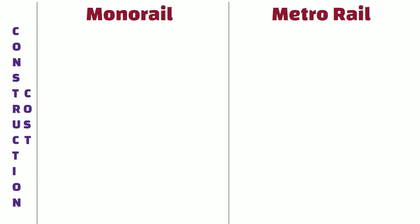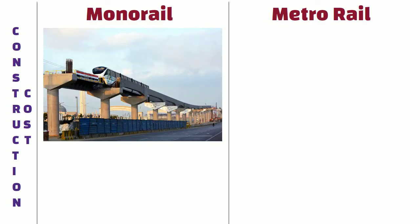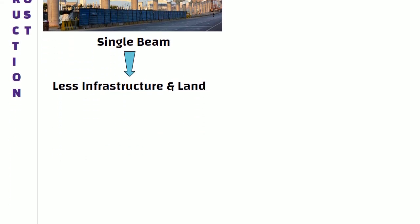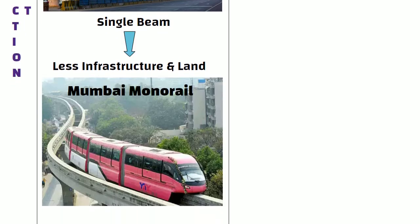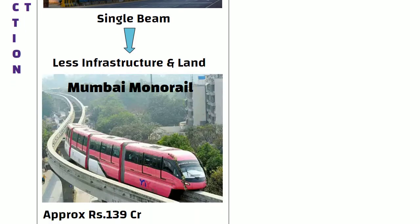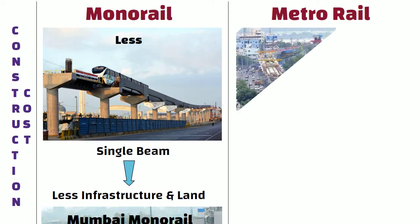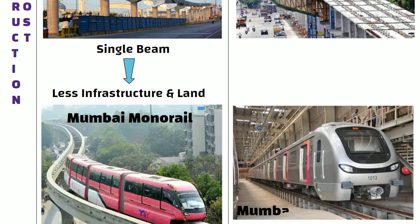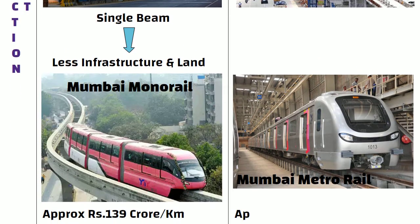Construction costs. Construction cost of monorail is less as compared to metrorail, as it requires a single beam for tracks, and ultimately less infrastructure and land is acquired. The cost of construction of Mumbai monorail is approximately 139 crore per kilometer. On the other hand, construction cost of metrorail is more — for Mumbai metrorail, the cost of construction is approximately 417 crore per kilometer.